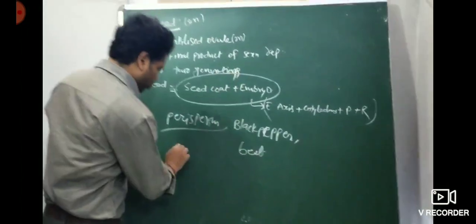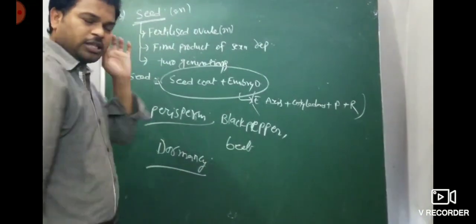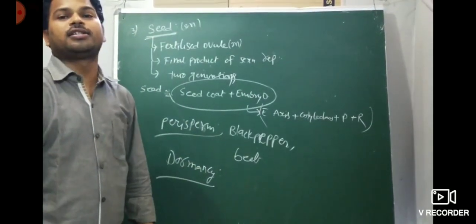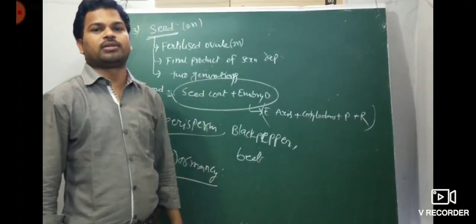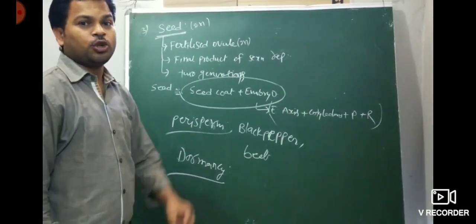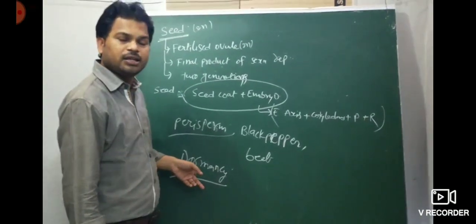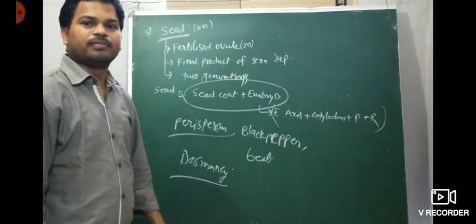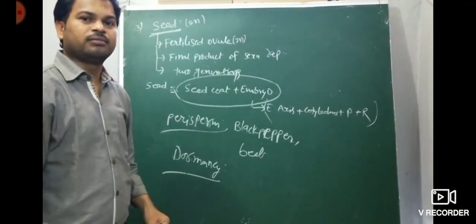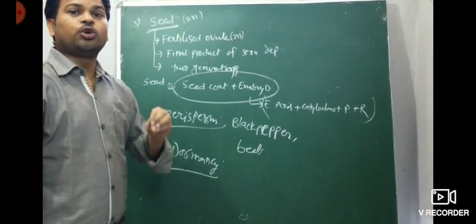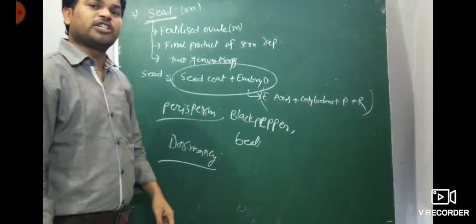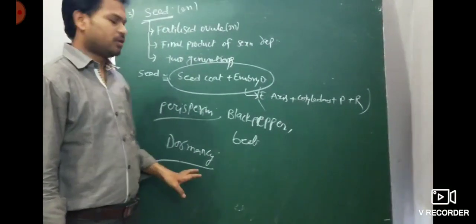Dormancy: when the seed matures, the water content in the seed is reduced, causing the embryo to become inactive. This inactivation of the embryo is called dormancy. During unfavorable conditions, seeds remain inactive. When favorable conditions come — adequate moisture, sufficient oxygen, and suitable temperature — seeds germinate.